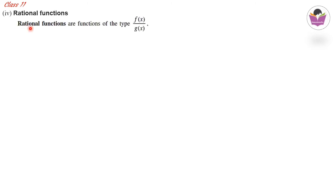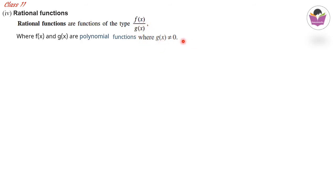Next are rational functions — functions of the type f(x)/g(x), where f(x) and g(x) are polynomial functions, with the condition that g(x) ≠ 0. An example: f from ℝ\ {0} to ℝ defined by f(x) = 1/x. The domain excludes 0 since dividing by zero is undefined.